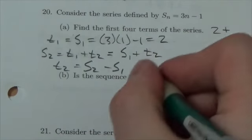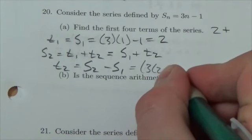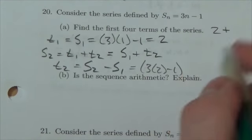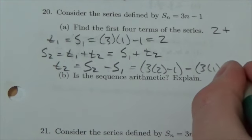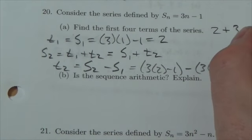So to get the second term, this is going to be the second sum. So it's going to end up being three times two minus one, which is five, minus three times one minus one, which is two. So five minus two, and the answer is three.